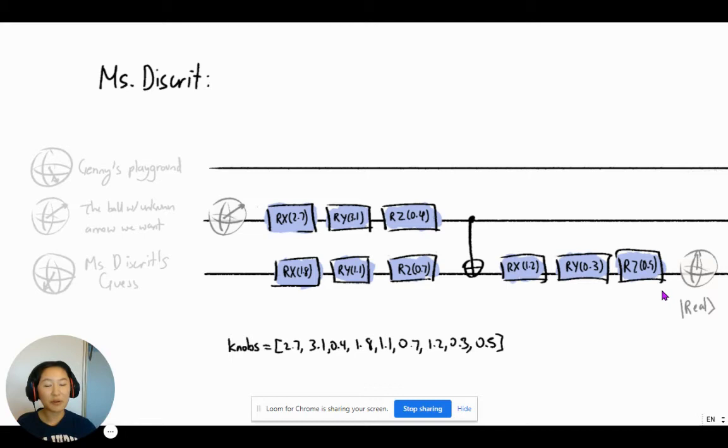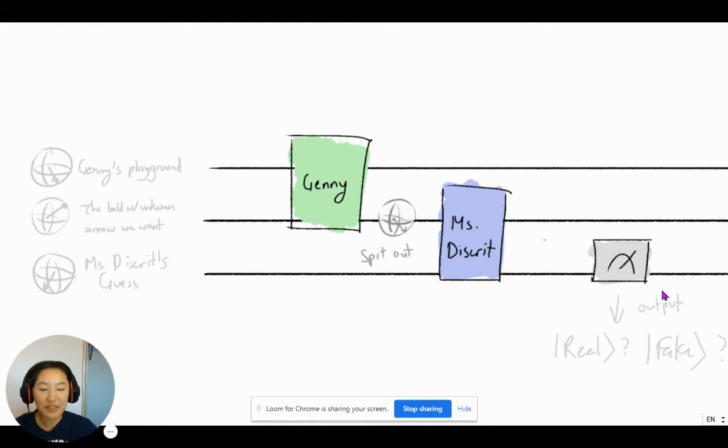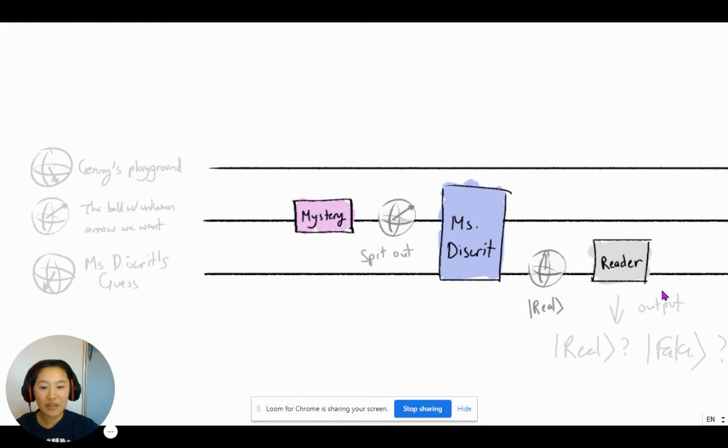Mrs. Discrit's quantum circuit will take in the ball with unknown arrow that Jennie spat out. And depending on what her knobs are, she will either classify it as fake or real. And our goal is to find the optimal combination of knobs for her to classify it correctly. More quantum machine learning. And putting these two together, we get Jennie spitting out a ball with unknown arrow that Mrs. Discrit takes in, and she outputs a guess whether it's fake or not. And then we just read this guess.